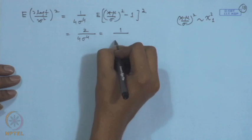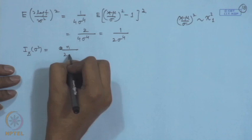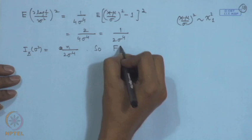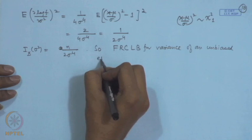The Fisher information in the sample about σ² is n/(2σ⁴). Therefore, the Cramér-Rao lower bound for the variance of an unbiased estimator of σ² is 2σ⁴/n.